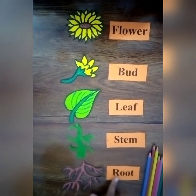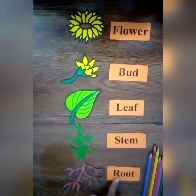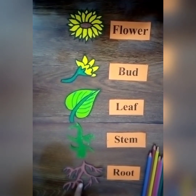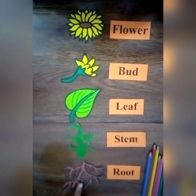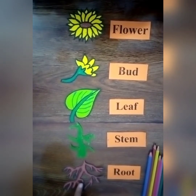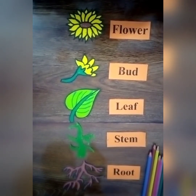Roots are present below the soil. They absorb water and minerals from the soil and supply it to the shoot. Roots also support and hold the plant firmly in the soil.